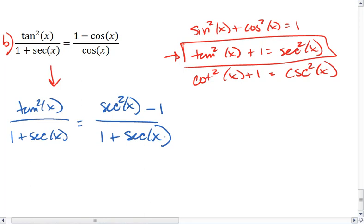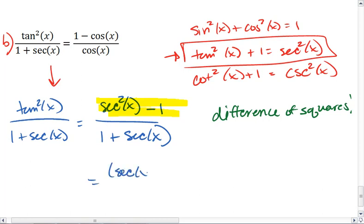What you then need to be able to recognize is that secant squared x minus 1 is the difference of squares. Both secant squared and 1 are perfect squares, and so they factor into secant x plus 1 and secant x minus 1.